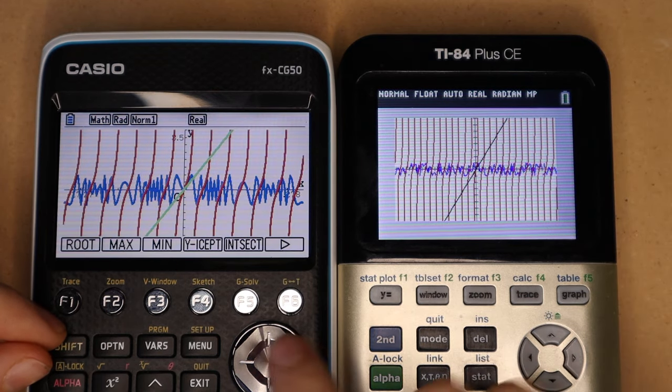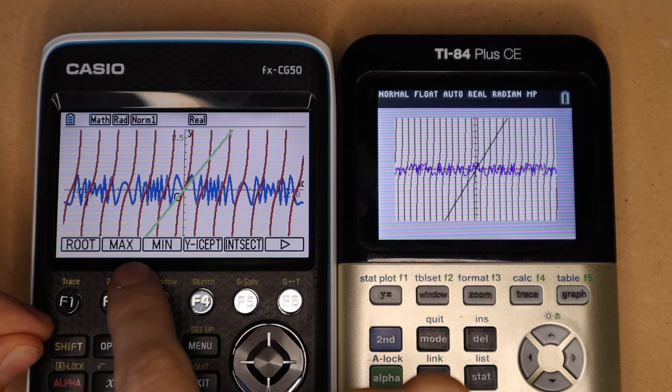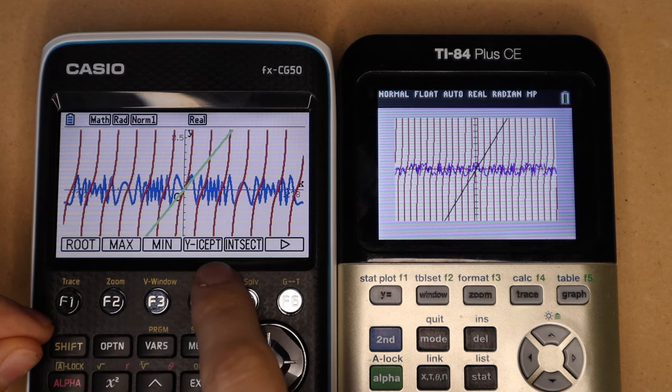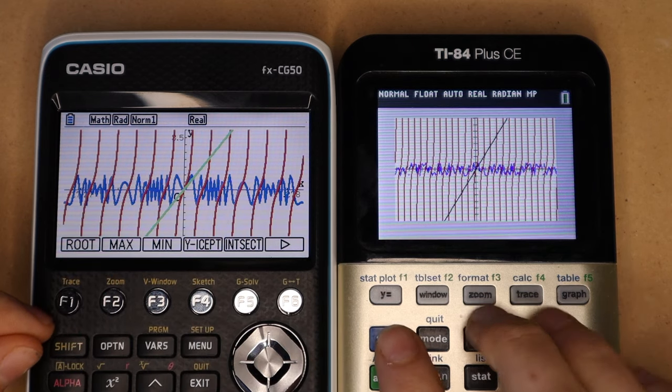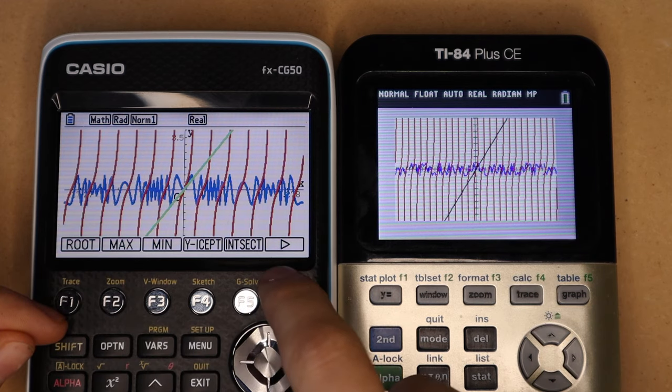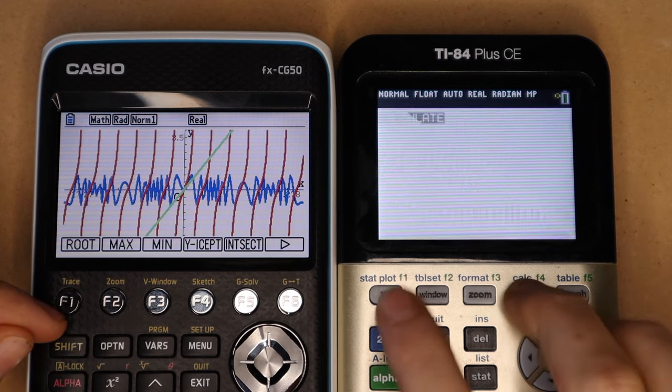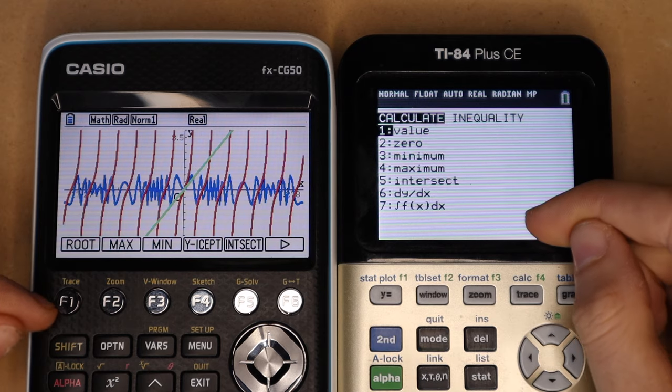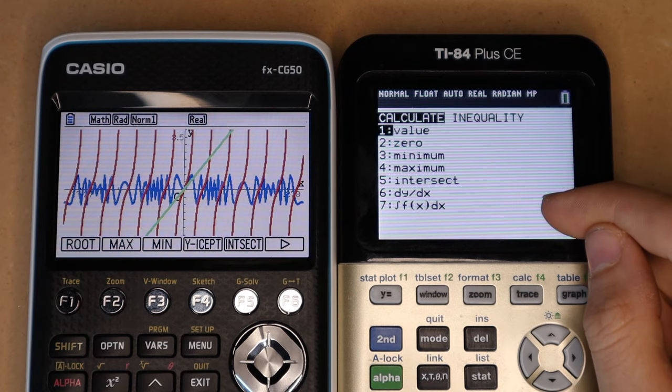And then in the graphing app, both calculators have the ability to show you things like maximum and minimum values or intersects for any of your functions. That shows up in a menu at the bottom on the Casio, and then you just hit second calc, and you get a list for those functions on the TI-84 Plus.